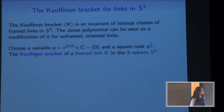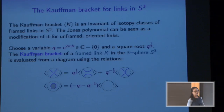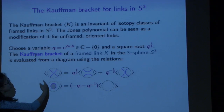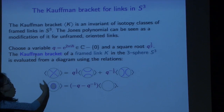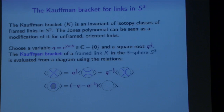The Kauffman bracket is computed for a framed link in S³. A link is just a disjoint union of circles, and the framing is a choice of normal vector at every point. To compute it, you draw a picture and apply combinatorial rules. If you see a crossing, you replace it with two resolutions: one with a coefficient of q^{1/2} and the other q^{-1/2}. If you see a small circle that bounds a disk, you can remove it at the cost of introducing a factor of −q − q^{−1}.